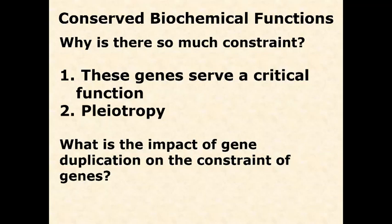The question is: why is there so much constraint? The first reason is that these genes have a critical function. Mutations in the past that changed their function were not advantageous, so they were never kept. Even though many mutations have occurred, natural selection weeded out the vast majority — at least those with a functional impact — so these genes maintain their functional integrity across hundreds of millions of years of evolution.